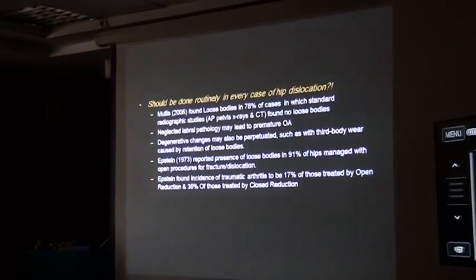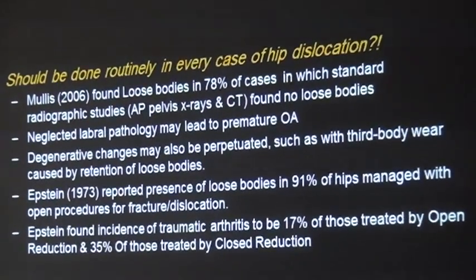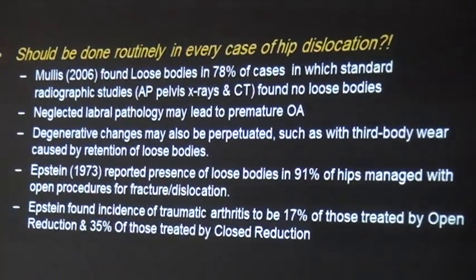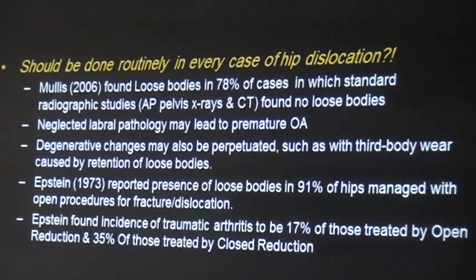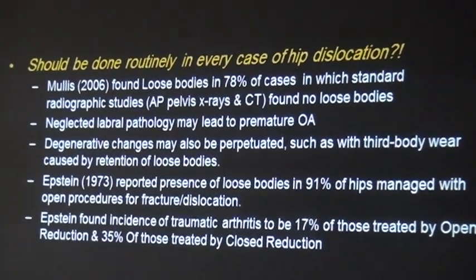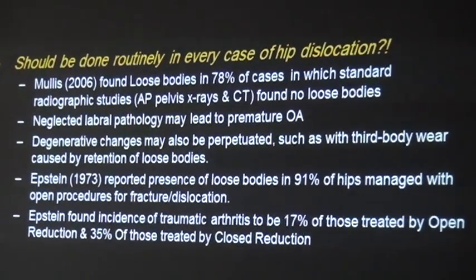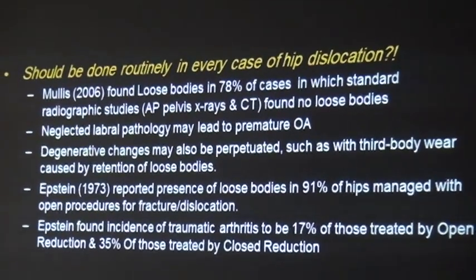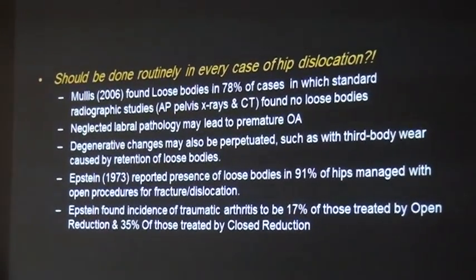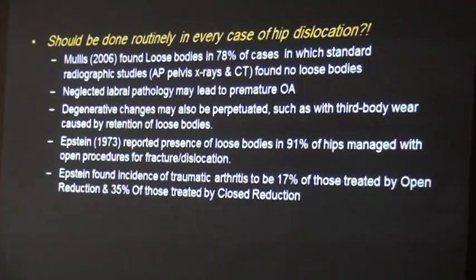According to Morris, hip arthroscopy should be done in every case of hip dislocation, though this remains a matter of controversy. He found loose bodies in 78 cases where standard radiographic and CT studies had not identified them. Neglected reparative pathology may lead to premature osteoarthritis, and degenerative changes may also be accelerated by loose body wear caused by retention of these bodies.